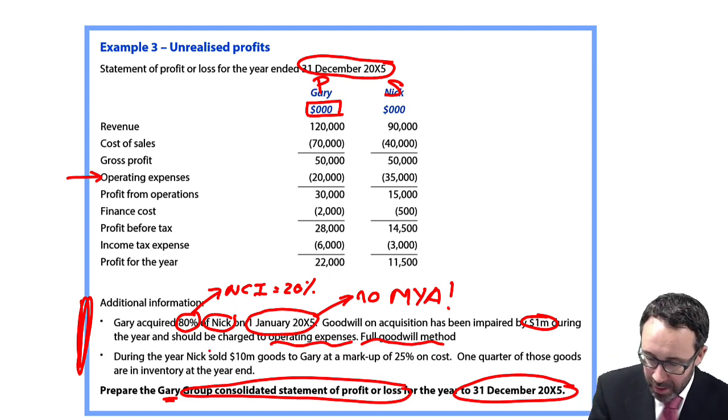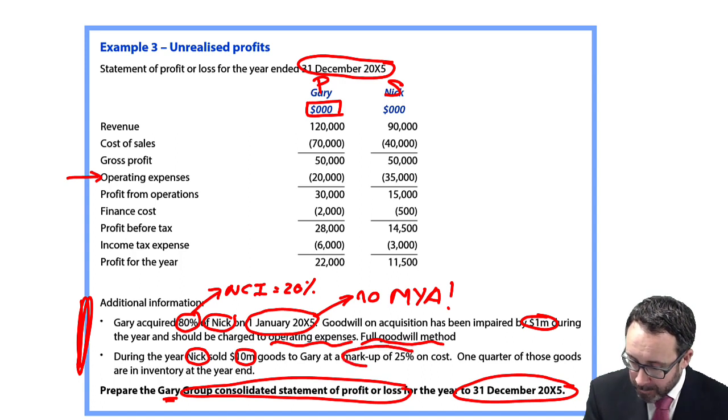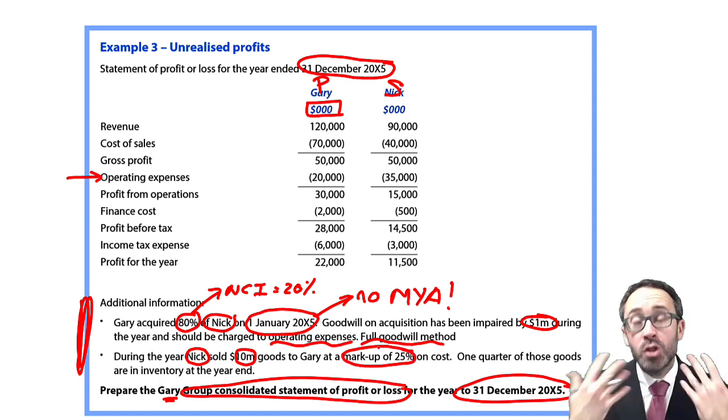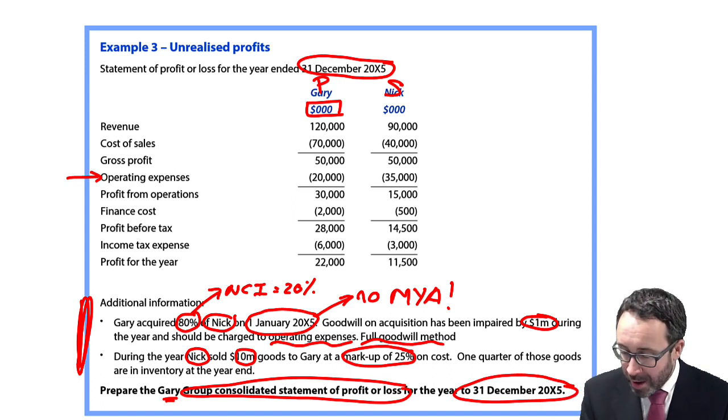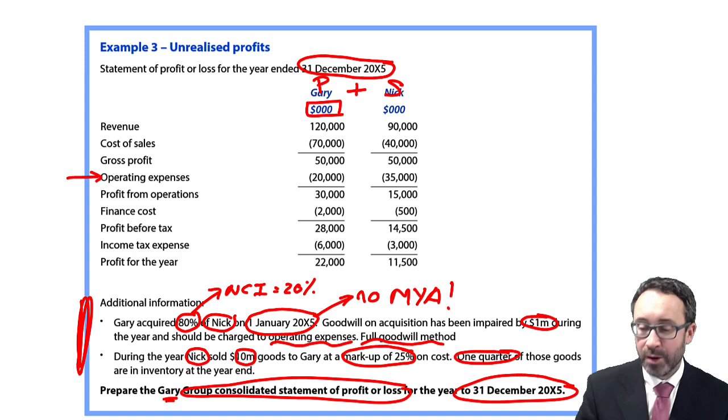We're also told that Nick, the subsidiary, sold 10 million pounds of goods, so we're going to have to put in an intra-company elimination of those sales for 10 million. They were sold at a markup of 25%, so we can work out the total profit on the goods sold. However, only one quarter of those are in inventory at the year end, so we're only going to adjust for a quarter of that profit as that profit has not yet been eliminated. It hasn't been sold outside of the group. Pretty simple - we're going to add across P, add across S, and then make the necessary adjustments.